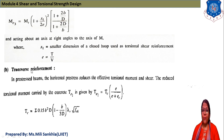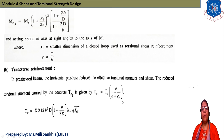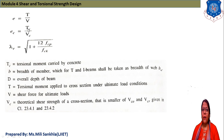For transverse reinforcement, the horizontal prestress reduces the effective torsion moment and shear. Reduced torsion moment carried by concrete: TE1 = TE / (E + EC). Here TE = σ × 0.15 B² D × (1 − B/(3D)) × δV × √FCK. E = T/V, EC is the eccentricity of concrete = TC/VC, and δV = 1 + 12FCP/FCK.